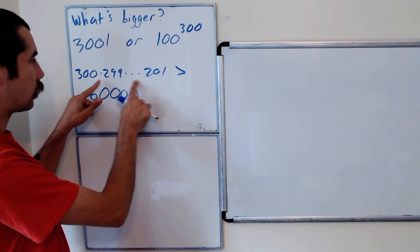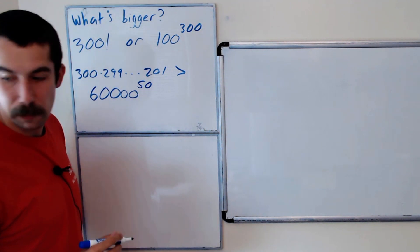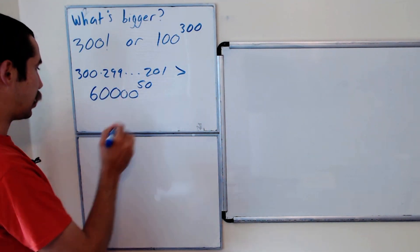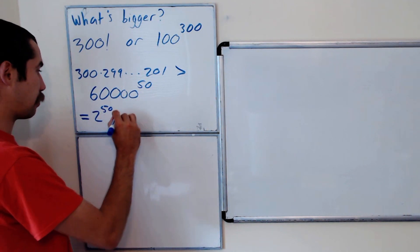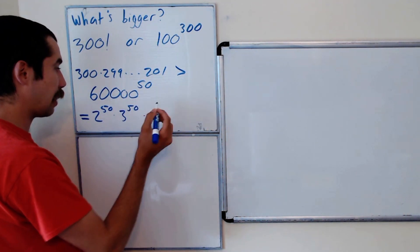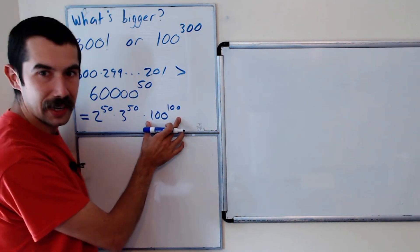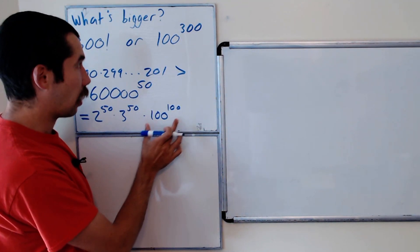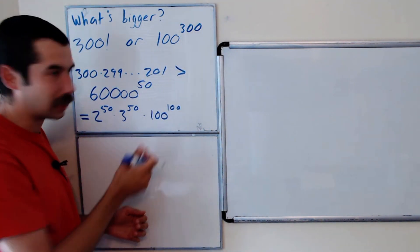Okay, and we're going to do this for each pair. So this is less than 60,000 to the 50th power, which is equal to 2 to the 50 times 3 to the 50 times 100 to the 100. Okay, we're going to try to get a factor of 100 to the 300 power and then some other terms left over.